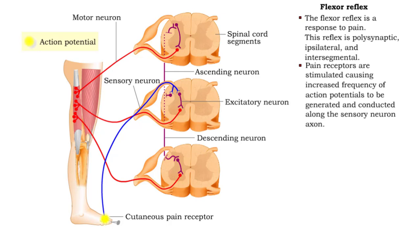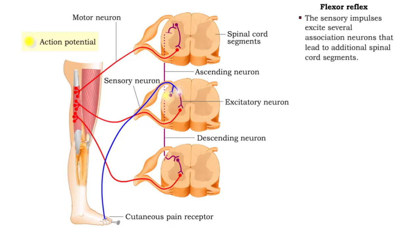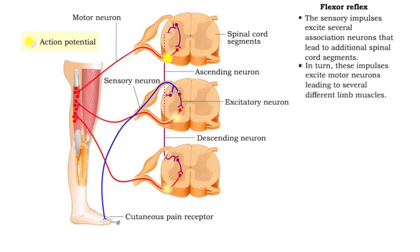Pain receptors are stimulated, causing an increased frequency of action potentials to be generated and conducted along the sensory neuron axon. The sensory impulses excite several association neurons that lead to additional spinal cord segments.